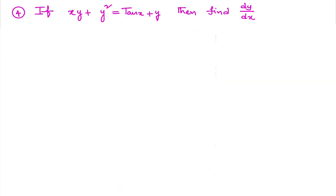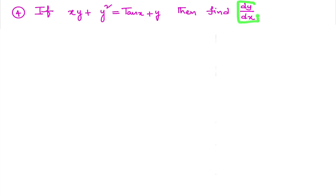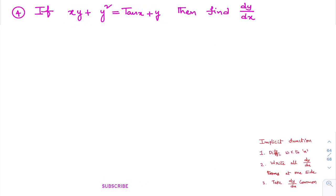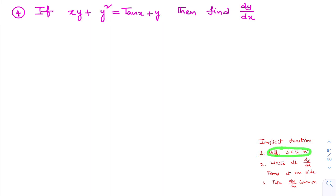Observe question number four: if xy plus y square equals tan(x plus y), then find dy/dx. This function is an implicit function because it is a function in terms of x and y. From this implicit function, we need to find dy/dx. While finding dy/dx from the implicit function, you need to keep three points in mind. To find dy/dx, first we will differentiate the given equation with respect to x on both sides.